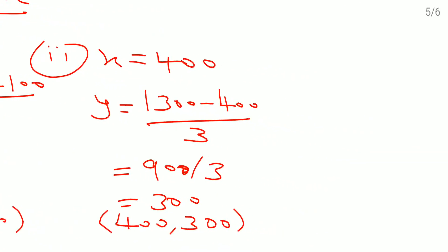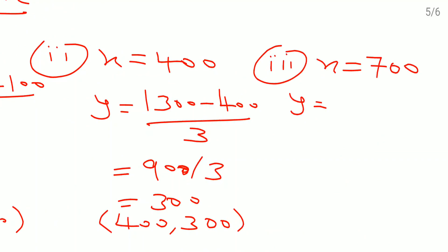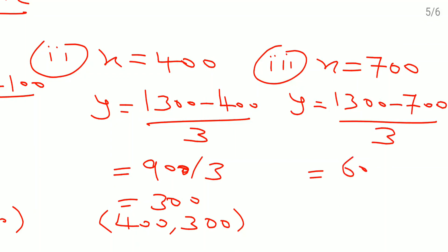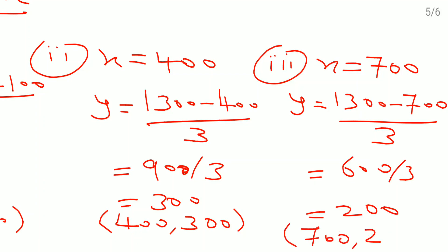For the third solution, suppose x = 700, so y = (1300 − 700) / 3 = 600 / 3 = 200. So the third solution is (700, 200). We got three solutions for the first equation and three solutions for the second equation.